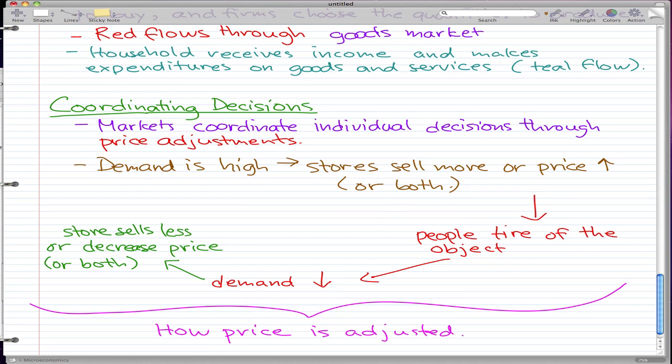But as time passes on, then pretty much, let's say that a new Blackberry or a new iPhone version has come out, and the old version of the two products are like deprecated now. So people get tired of the old version, and then the demand for the old version goes down. And if the stores still have stock left, they pretty much sell less, or they decrease the price of their goods, or they can do both.